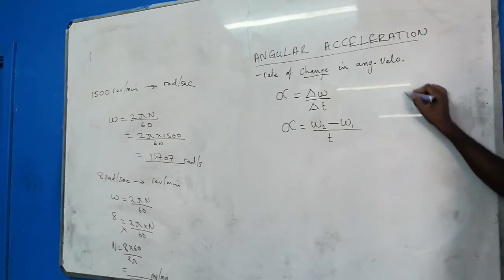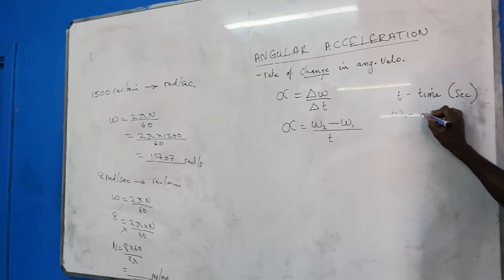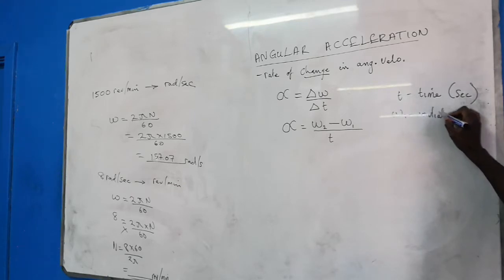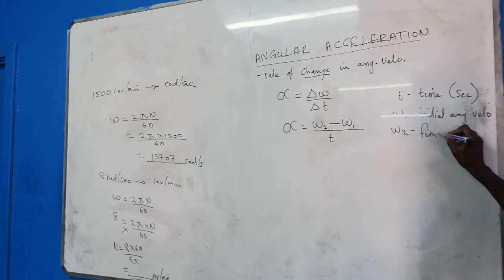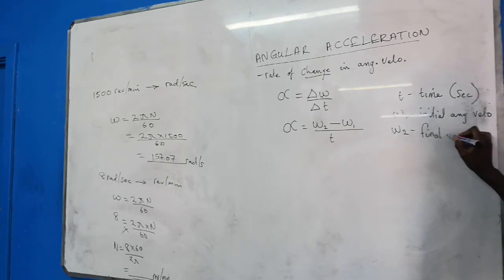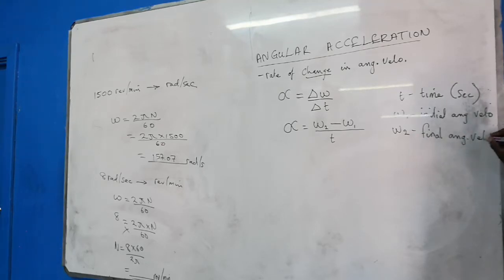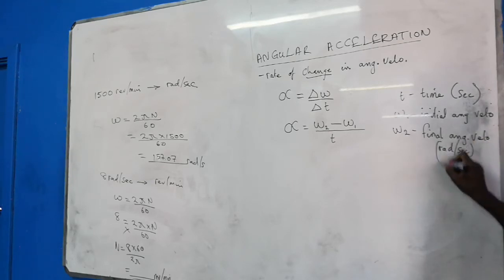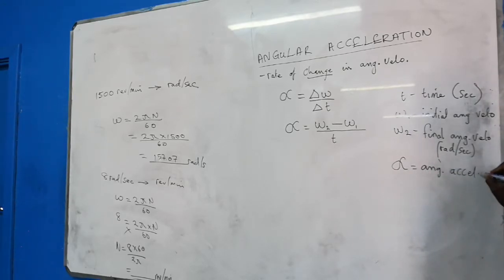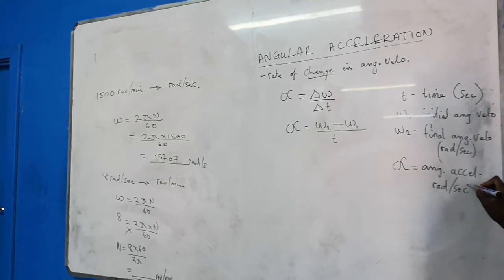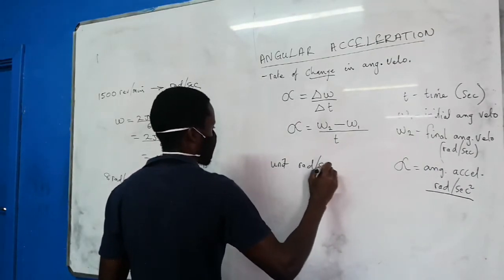Make sure your time T is always in seconds. Angular velocity 1 is the initial angular velocity. Angular velocity 2 is the final angular velocity. These angular velocities should be in radians per second. The alpha is angular acceleration in radians per second squared. That's the unit.